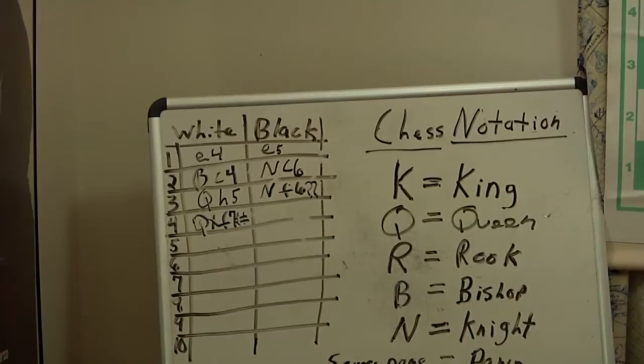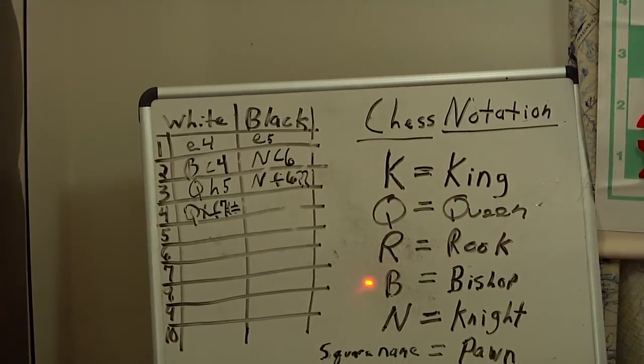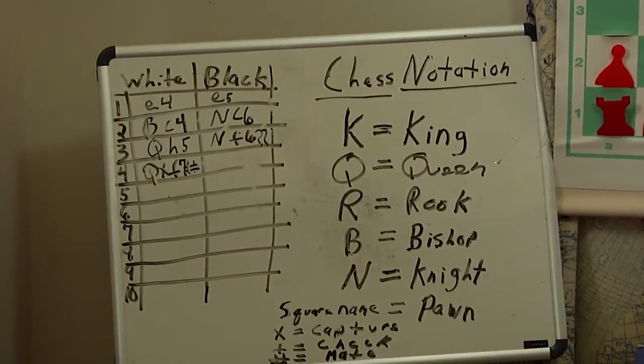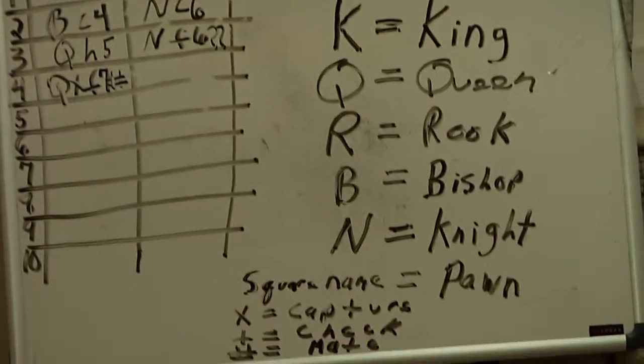So to recap here, in chess notation, we use K for king, Q for queen, R for rook, B for bishop, N for knight, and the square name it moved to for the pawn, X for capture, plus for check, and number or pound sign for mate.